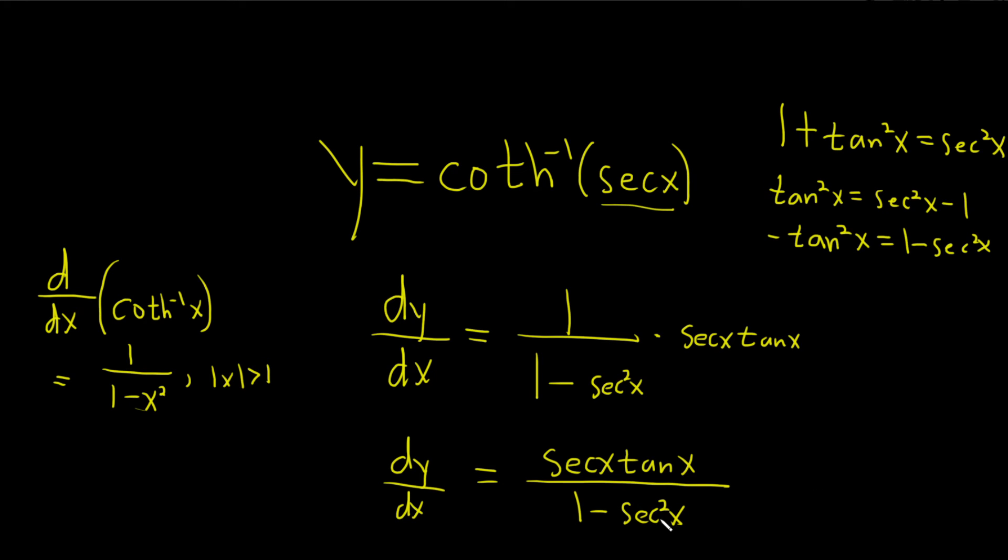Okay, so the bottom can be replaced with that. So let's go ahead and do that. So secant x tangent x over negative tangent squared. So we can certainly do that. It's not really necessary. We could have stopped there, I suppose.